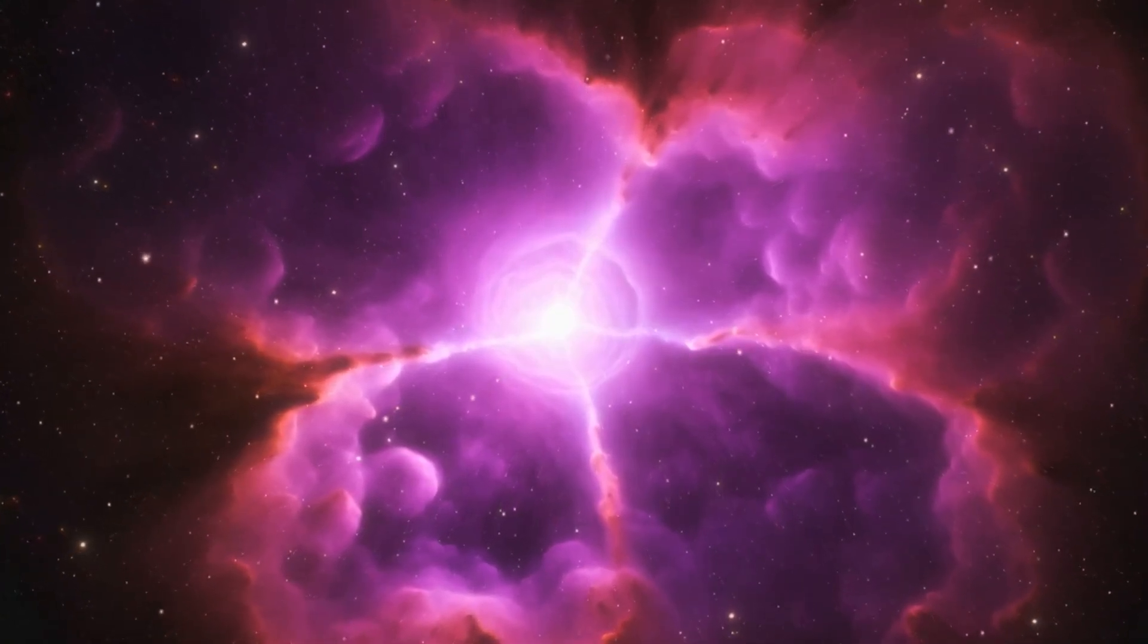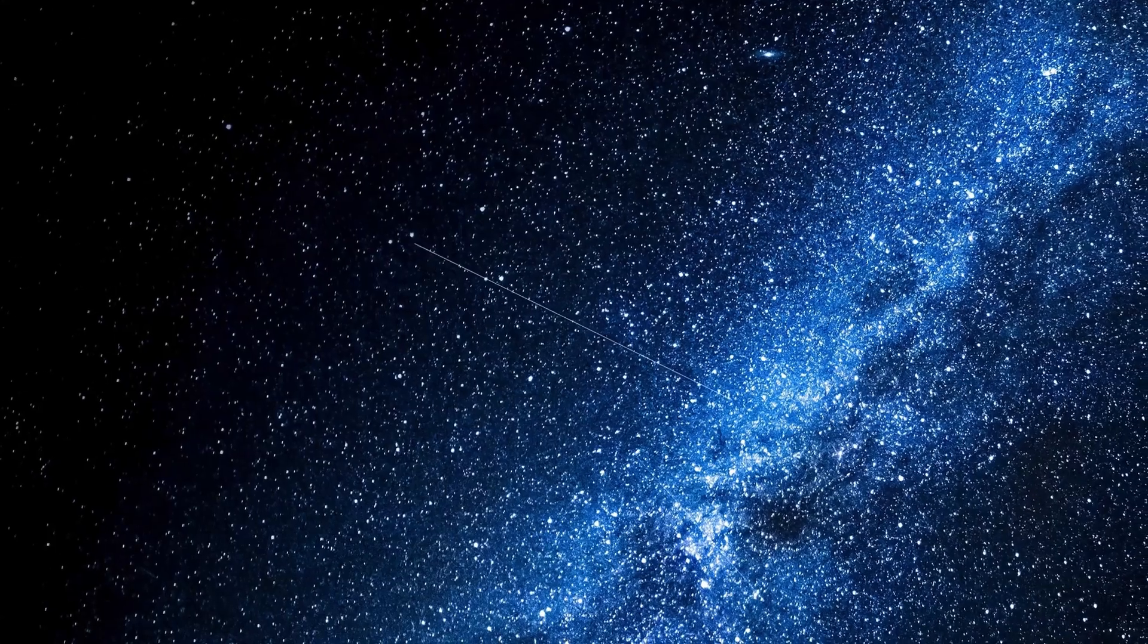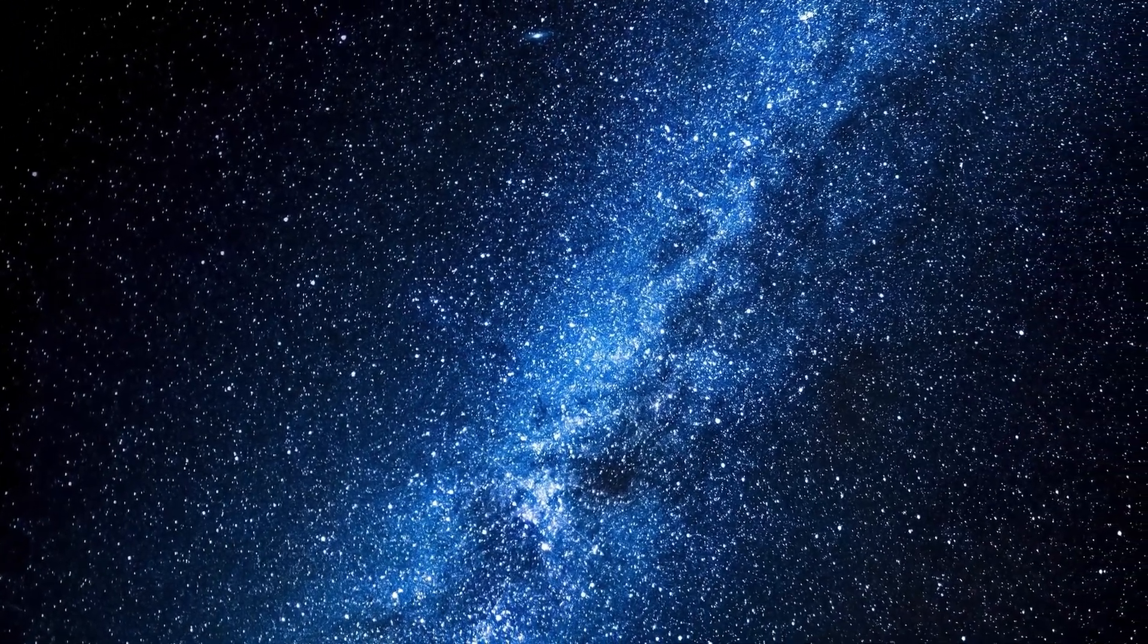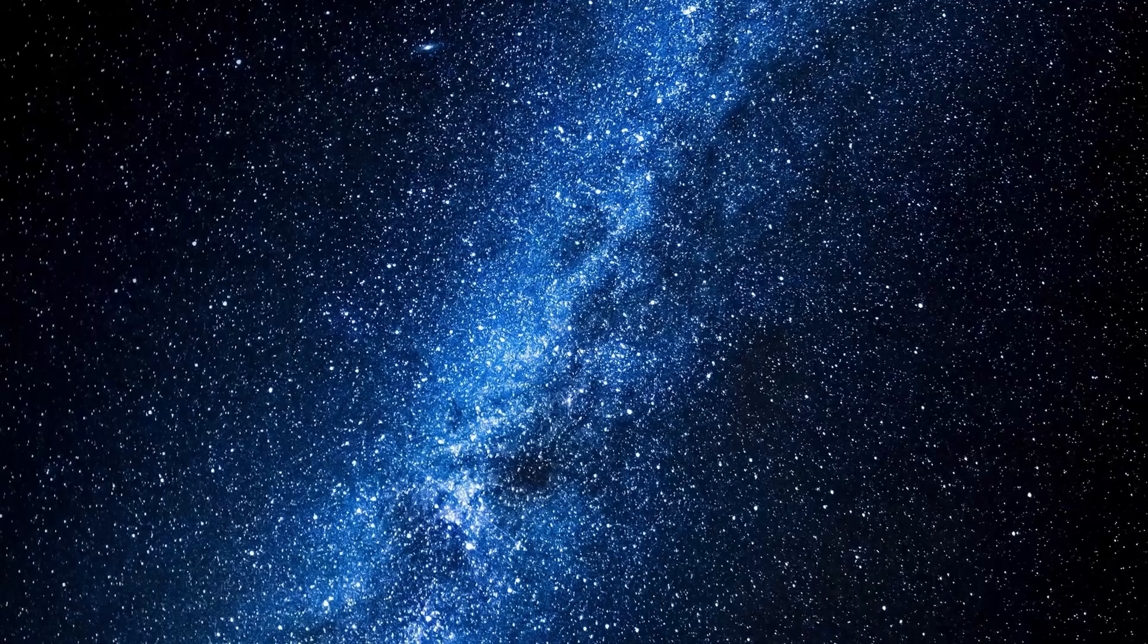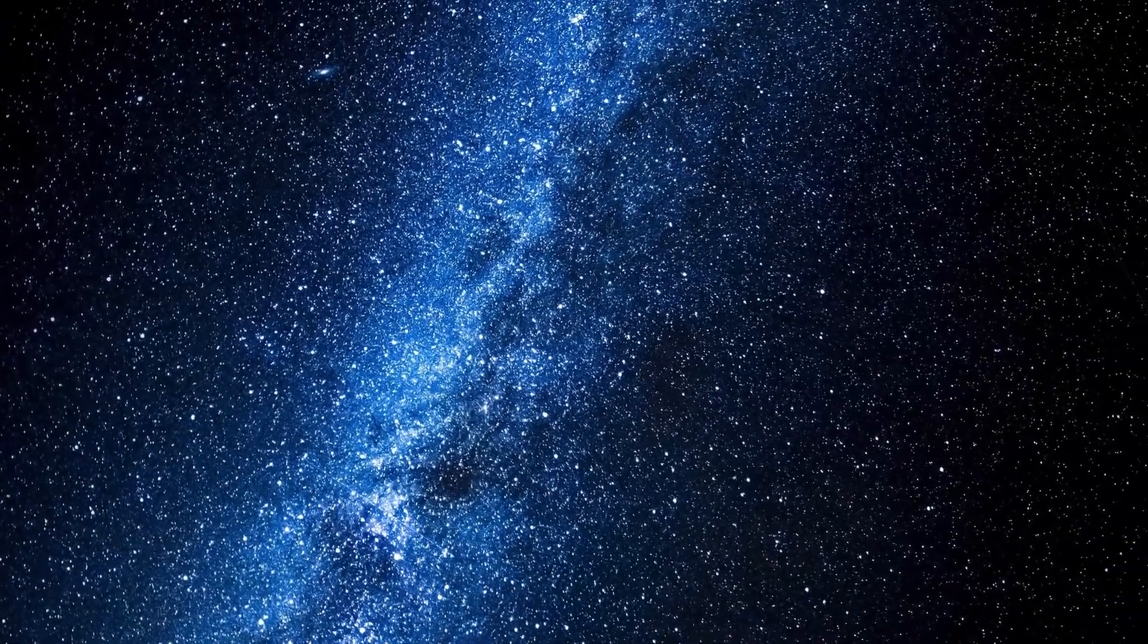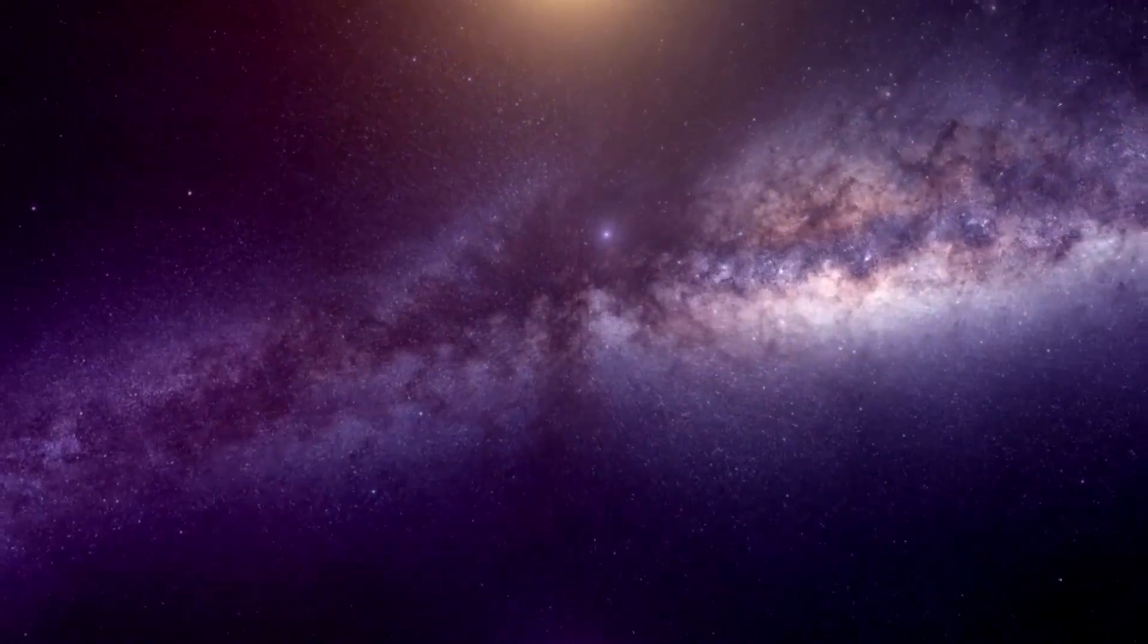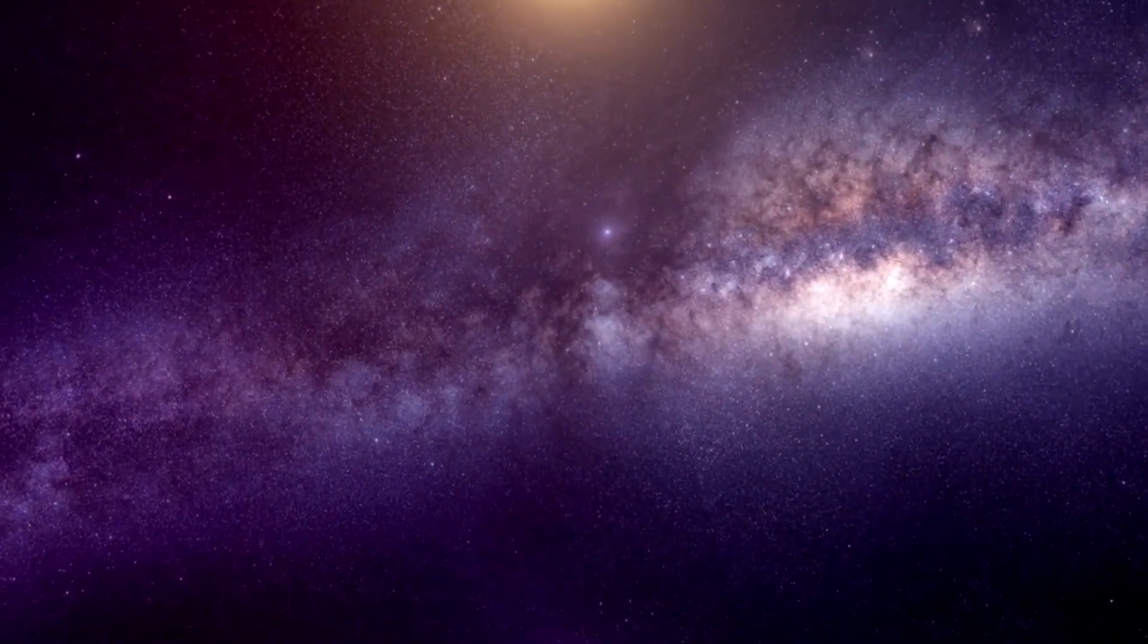Picture this. Stars, once bright and shining, meet their violent end in a massive explosion called a supernova. From the remains of these fallen giants, black holes arise. Most black holes are formed from massive stars that have reached the end of their life cycle in a supernova.